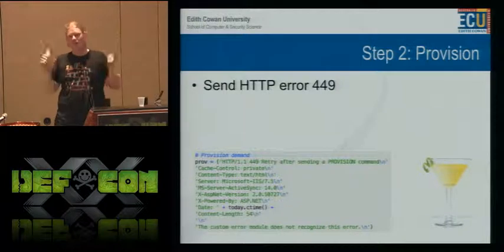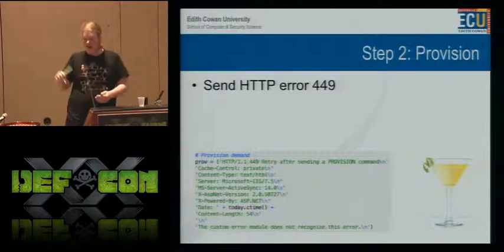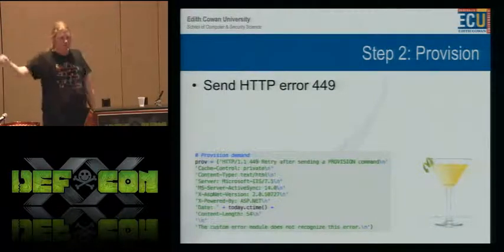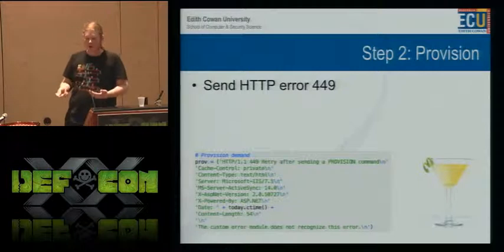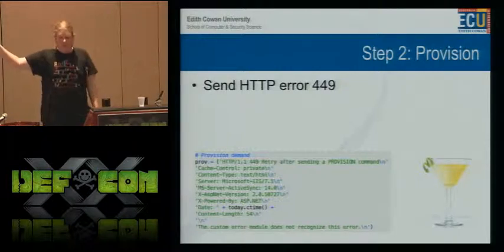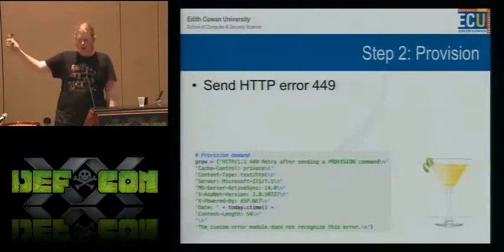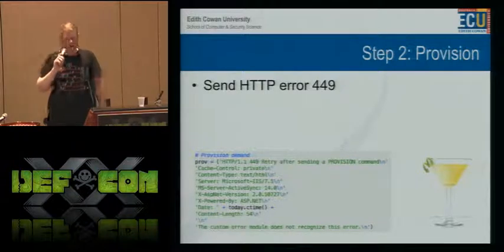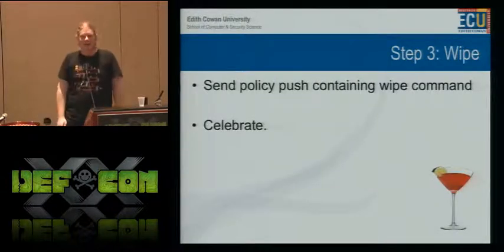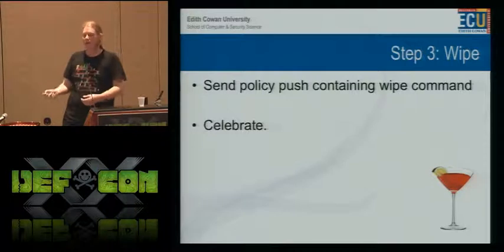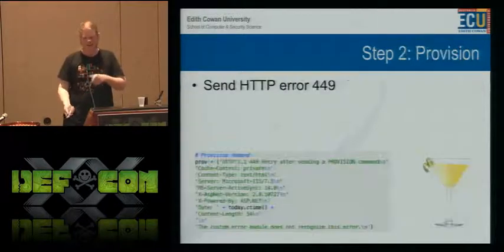So we accept our connection — and that really shouldn't work. But let's say it does. Then the next thing we need is to send HTTP error 449. This is the Python code to generate that command — it's just straight from the packet dump, aside from the time, which I had to insert. Because when I was playing with it, the phones wouldn't accept it otherwise — they really wanted the time on this provisioning request to be somewhere near reality. And step three is to send the wipe command, using the HTTP header for the wipe command.